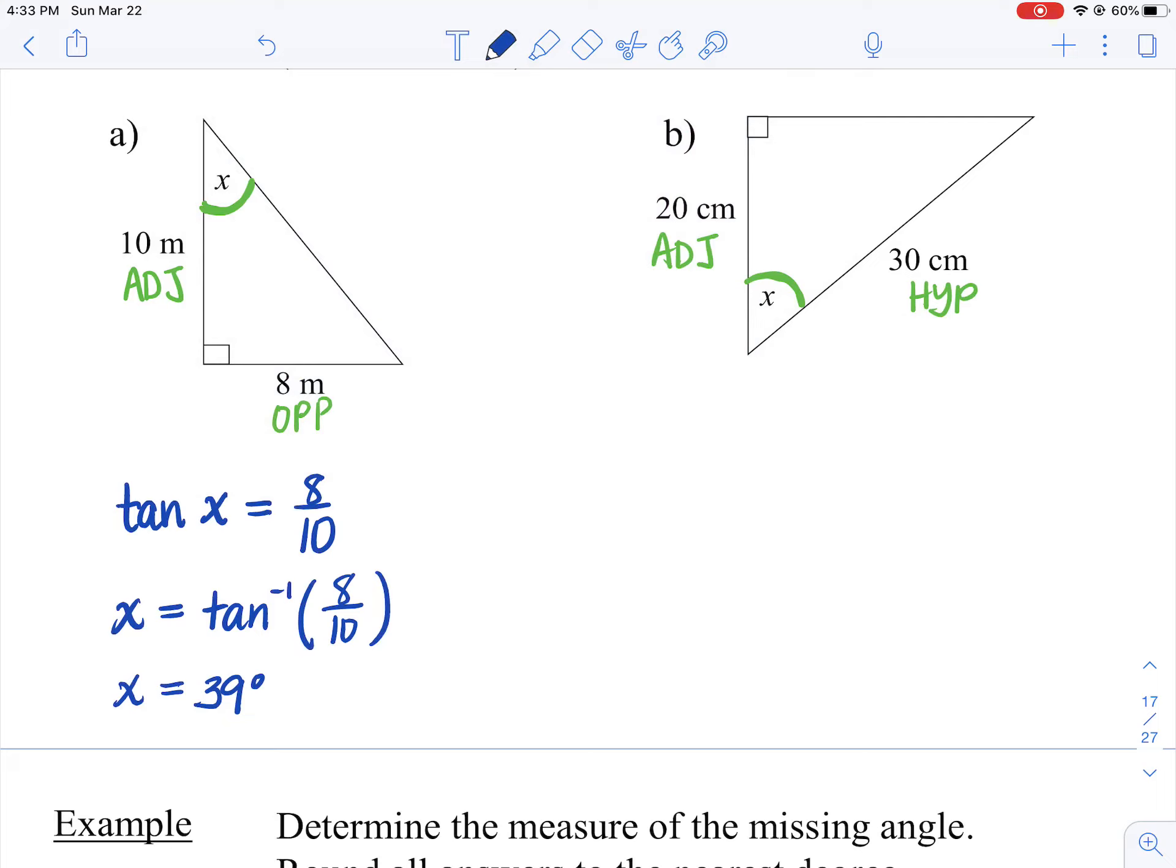A and H, which one? Cosine. So cos X, remember the angle goes right next to the trig function. Watch your notation here, guys.